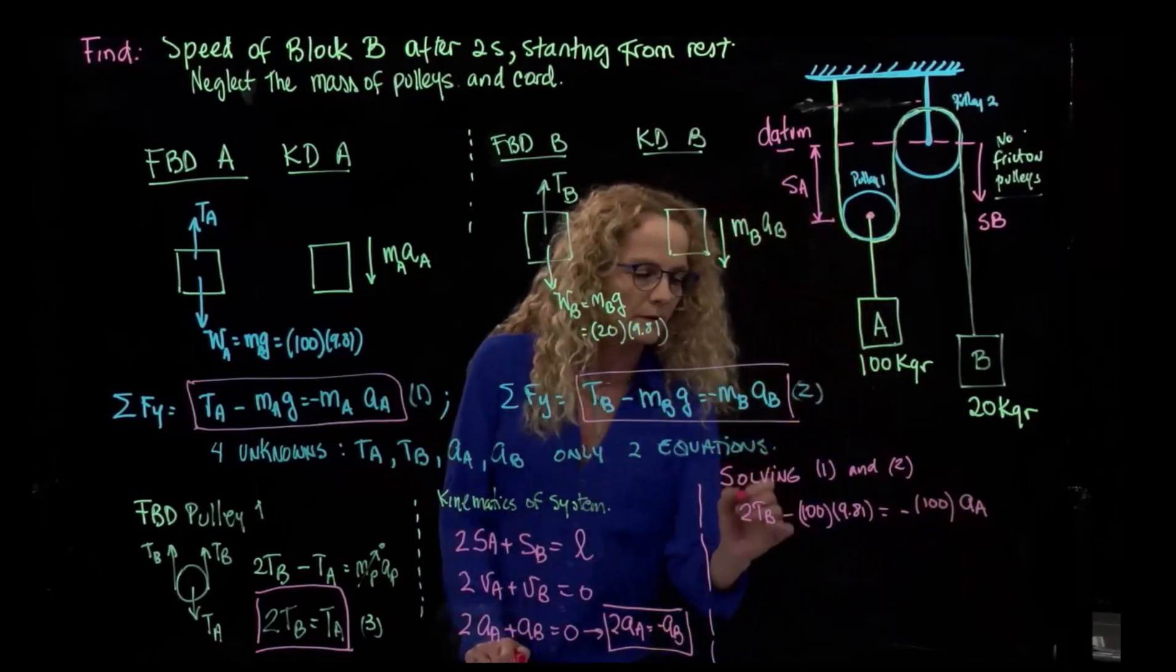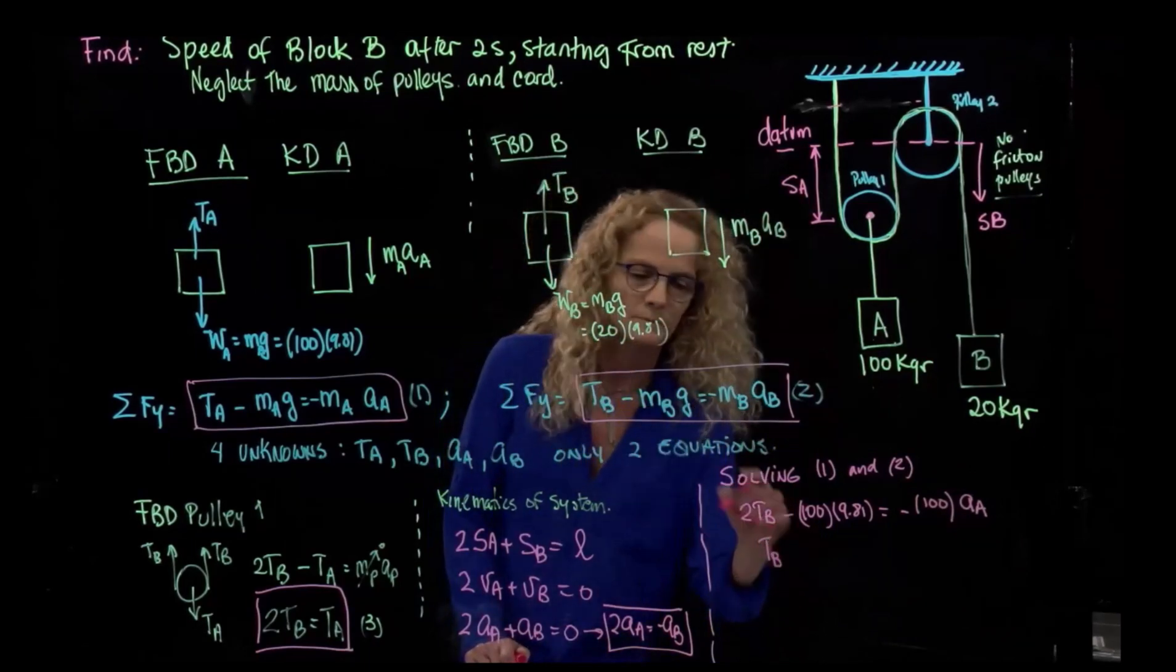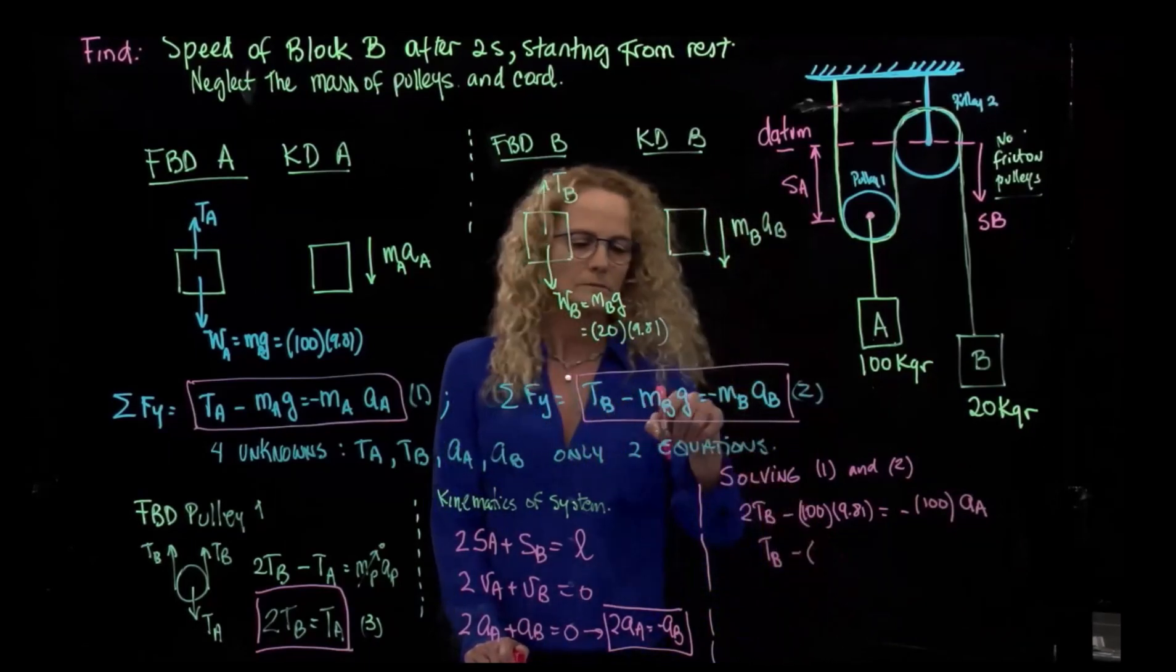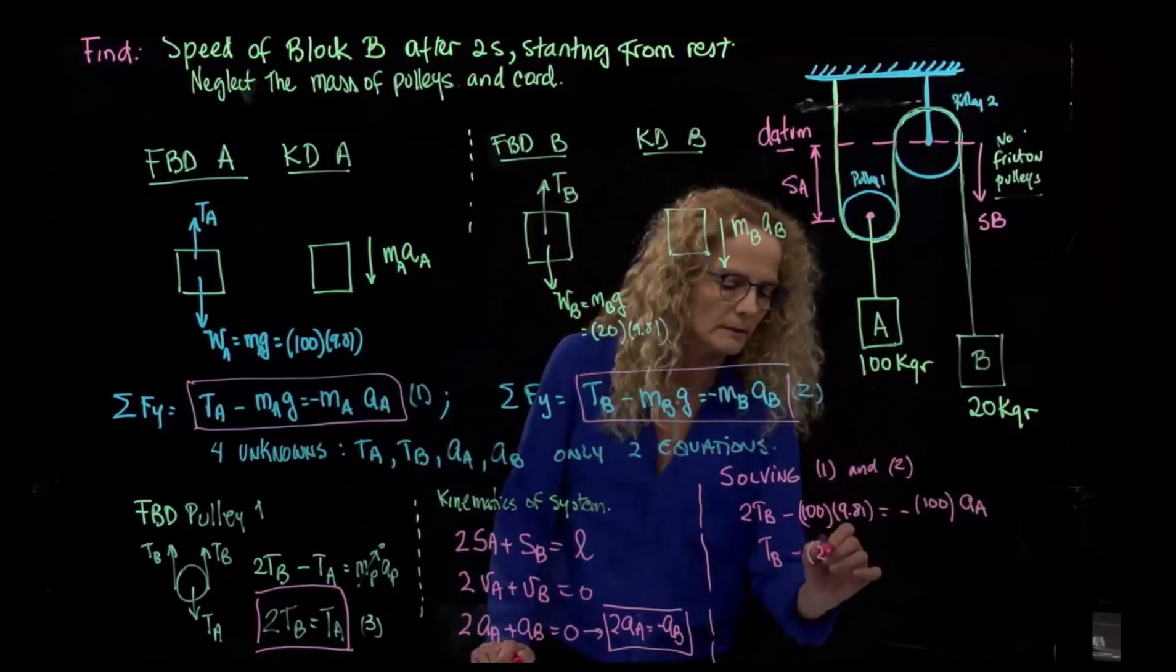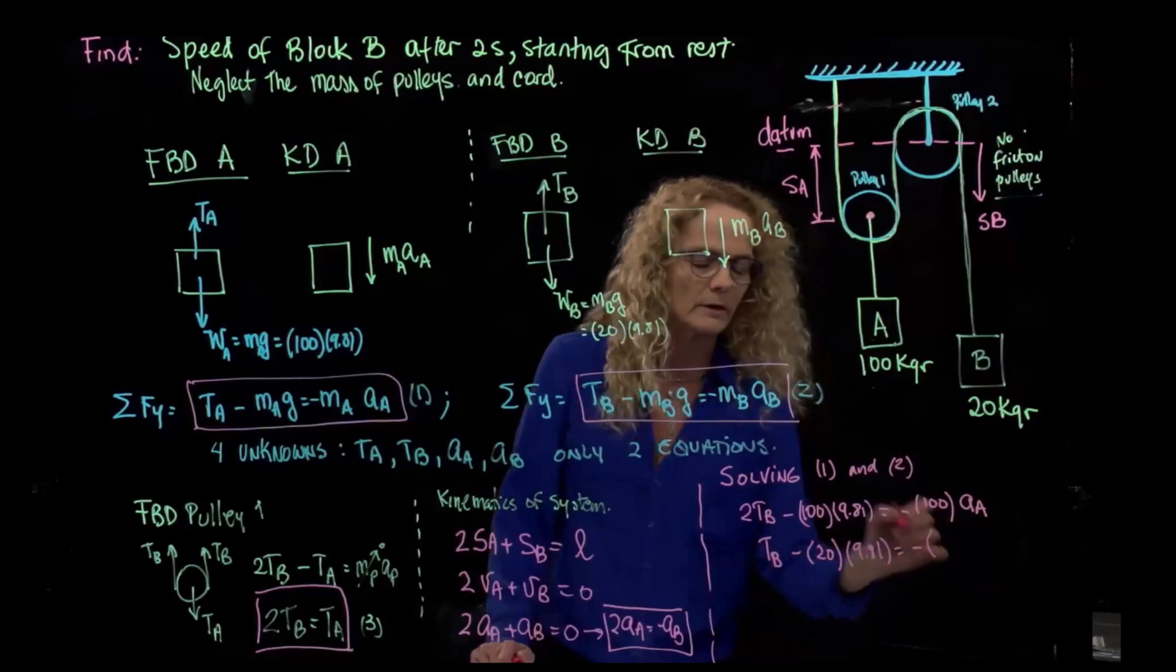Again, the mass is 20, and now I can substitute the acceleration of B times negative 2 acceleration of A.